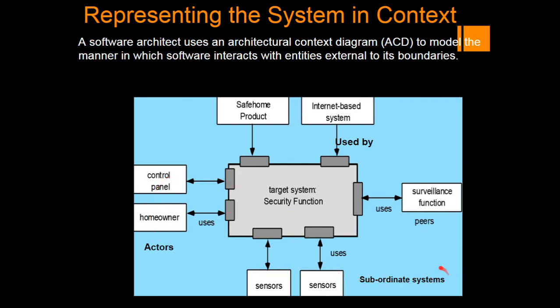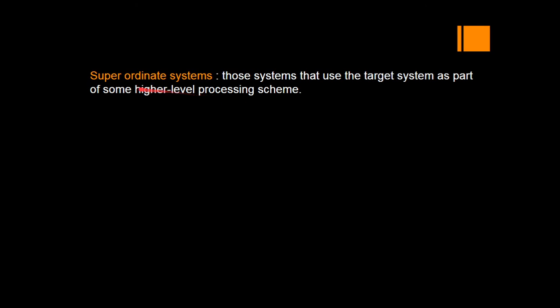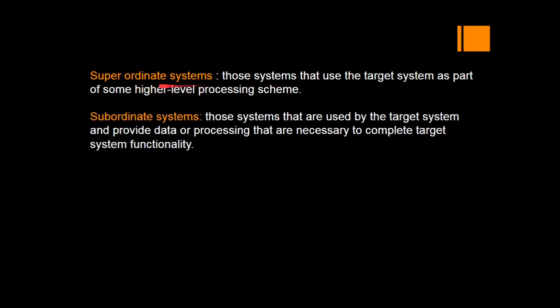These types of systems are called subordinate systems, where we use the 'uses' components — they give input and output in both directions, that means both uses and also used by. The generic structure of the architectural diagram is shown here. Superordinate systems are those systems that use the target system as part of some higher-level processing schema — that is the uses relationship.